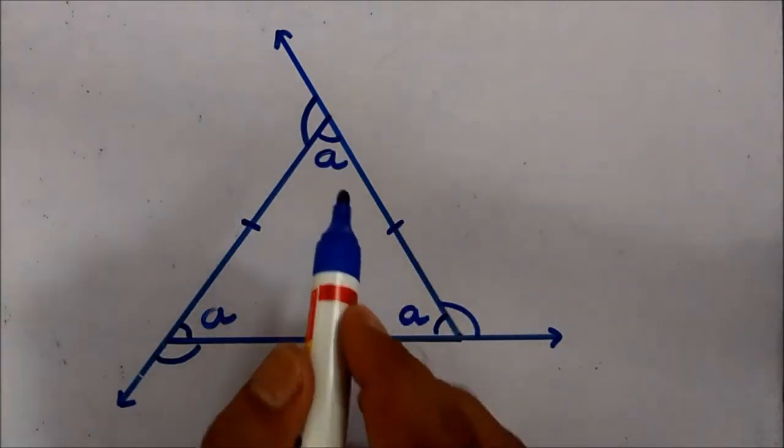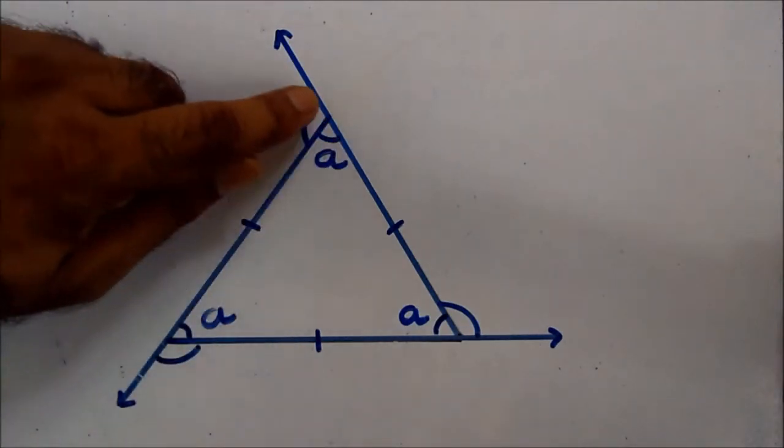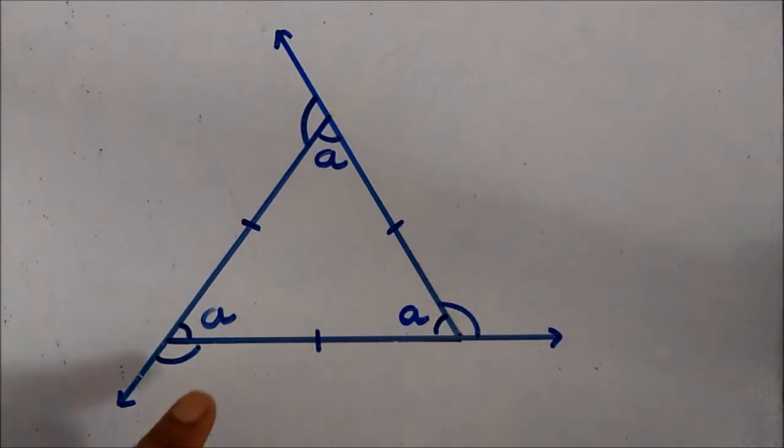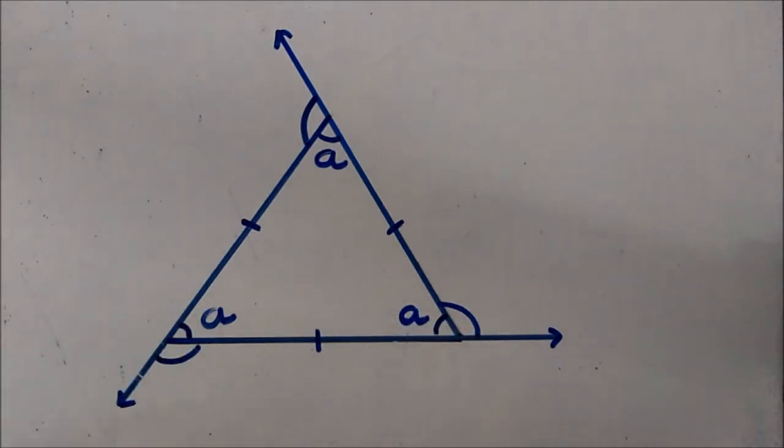And if we look here, the interior angle and exterior angle make the linear pair. Here also linear pair, here also linear pair. Since the interior angles are same, so exterior angles also become same.